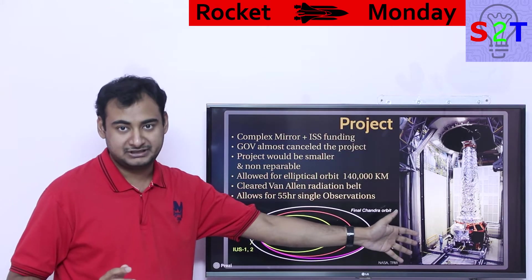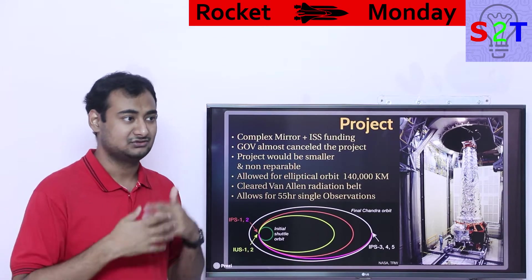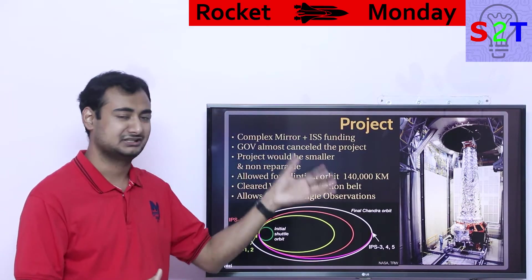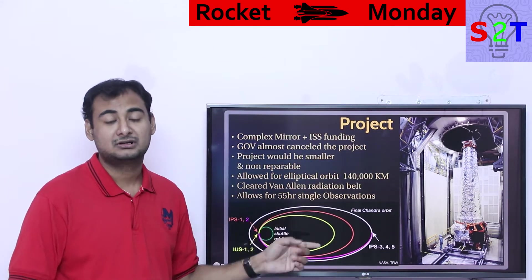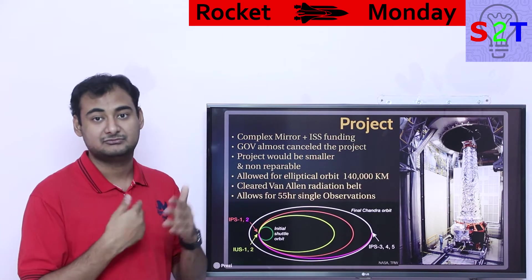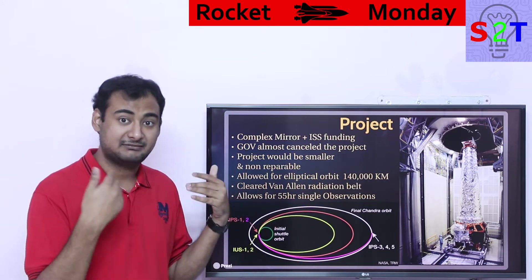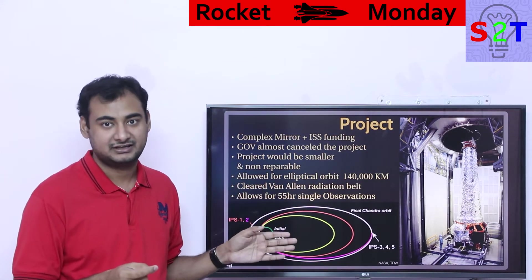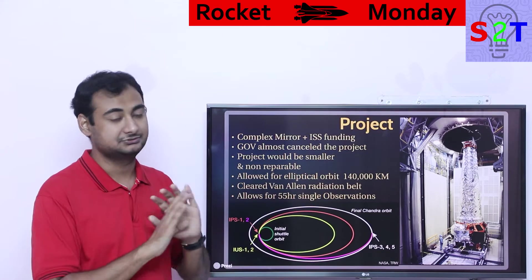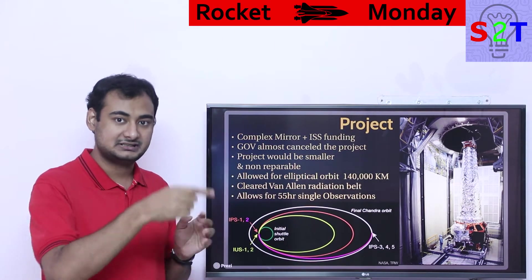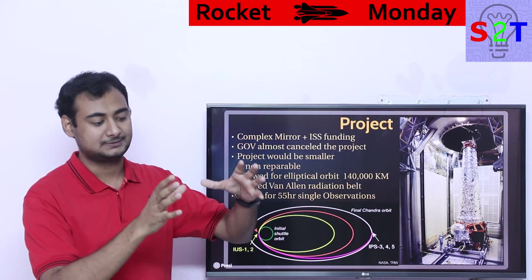They built the mirrors, learned a lot, and NASA said: okay, go ahead, but make it smaller. They didn't change the main optics but reduced the number of instruments. Originally they had large ambitions for many instruments — that was cut down to bare minimum. Also, unlike the Hubble telescope — which was designed to be repairable and upgradeable — Chandra was designed without repairability in mind, because dedicating resources to repairs meant additional Space Shuttle launches they couldn't afford.